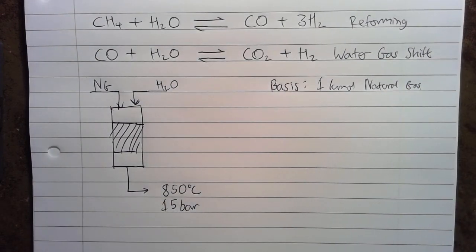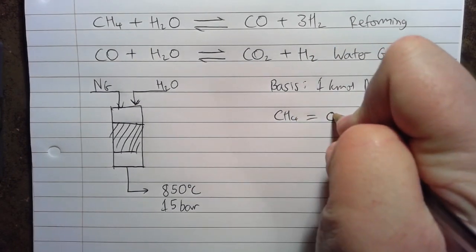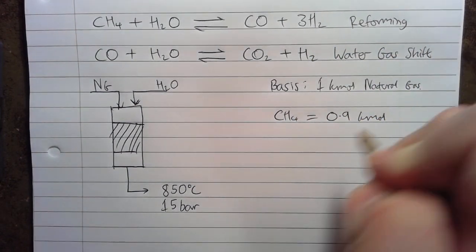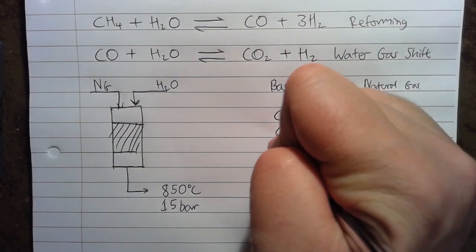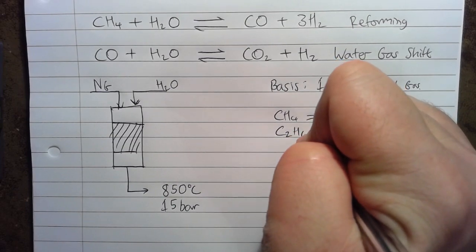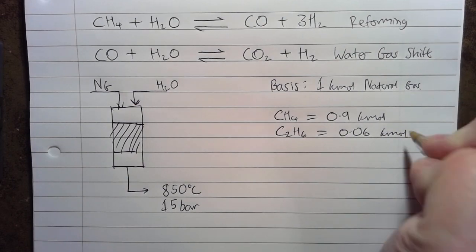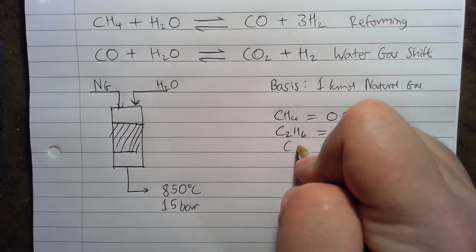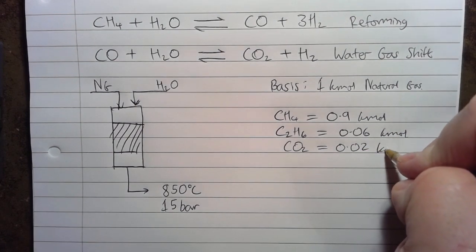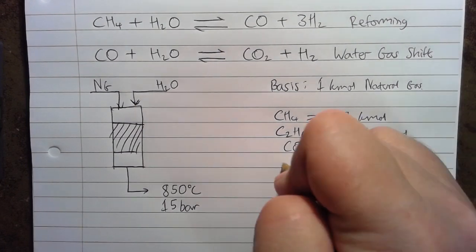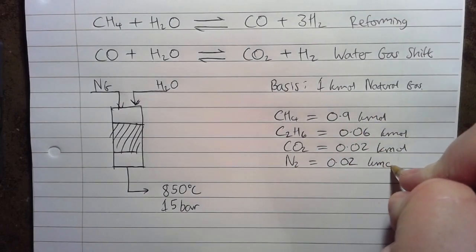Because the composition is given in the problem statement, we know that the CH4 will be 0.9 kmol, because it's 90% methane for the natural gas. And then, we've got ethane, C2H6, that is 0.06 kmol. CO2 is 2 mole percent, so 0.02. N2 equals 0.02 as well, because that is 2 mole percent.